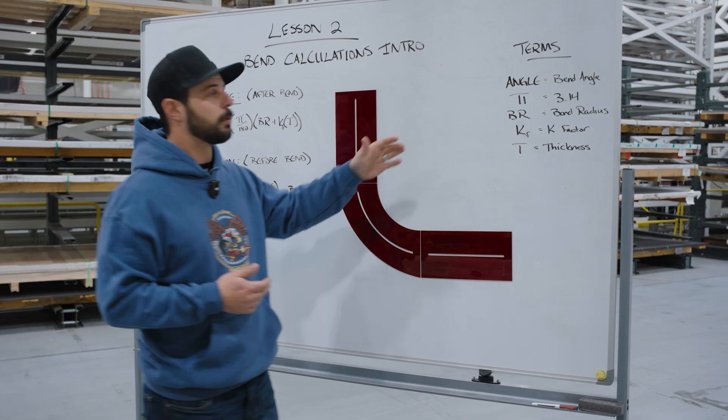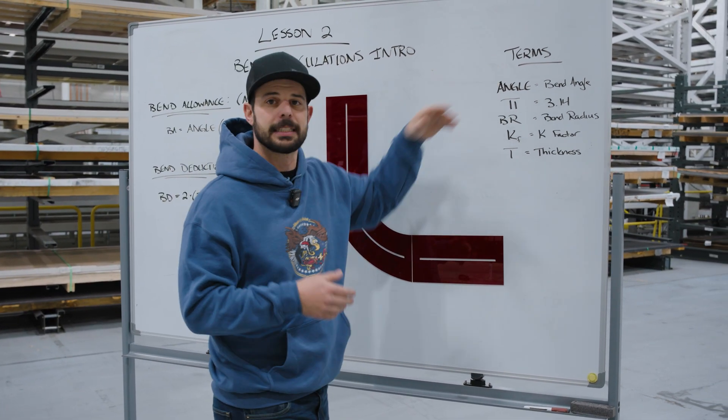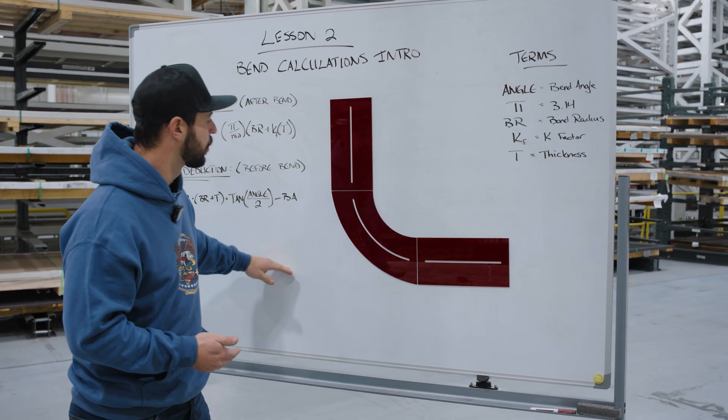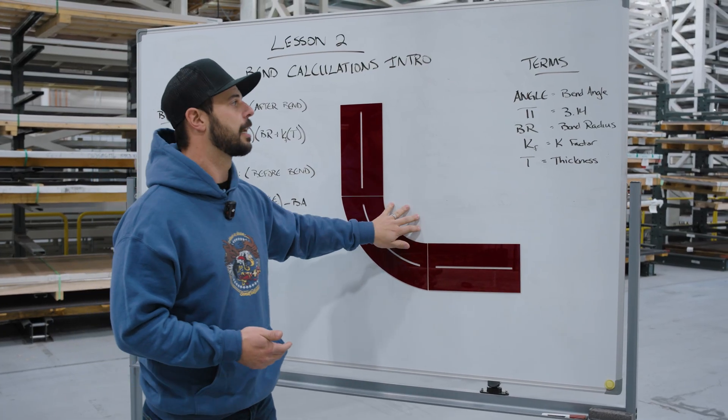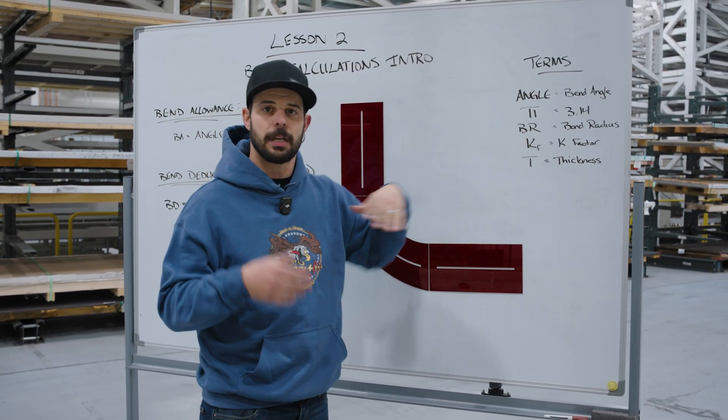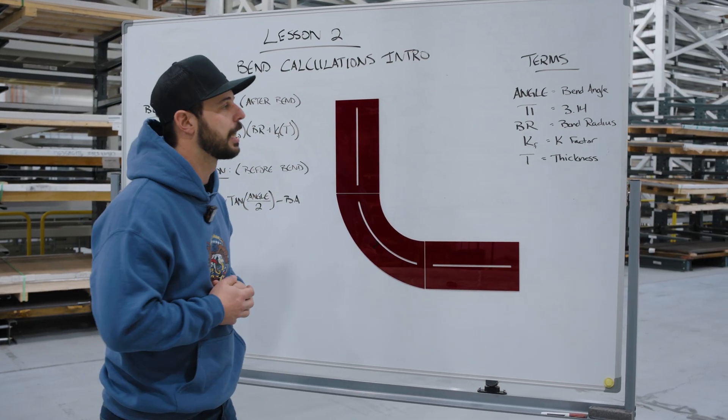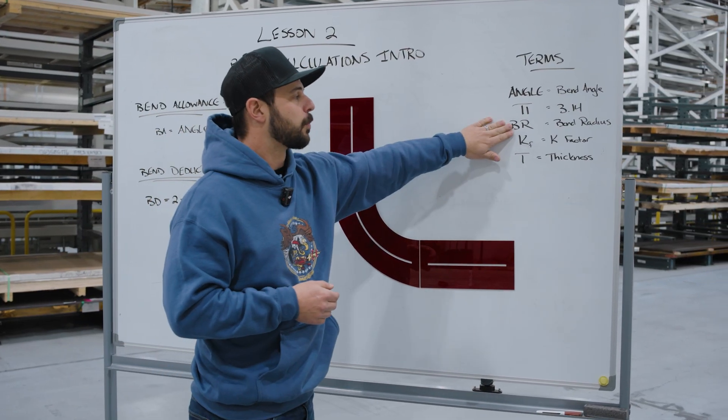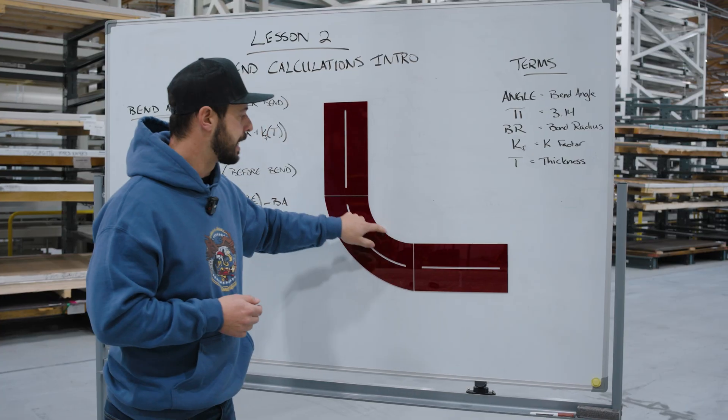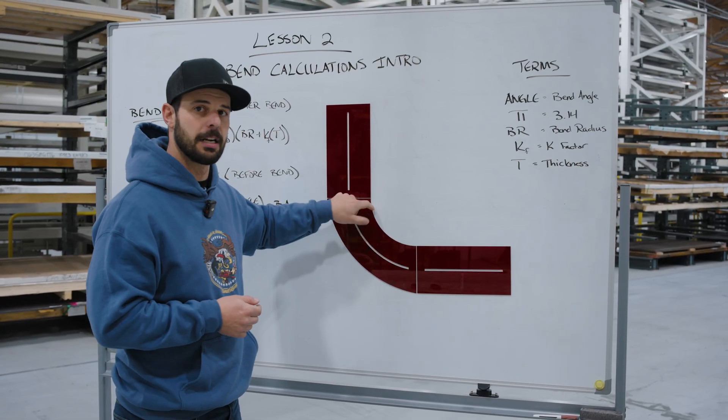As a little reminder, angle is the bend angle measured on the outside of this part, not the inside. We have pi, the standard constant of 3.14 we're going to use in our calculations. Bend radius is measured on the inside, the compressed side of our bend.